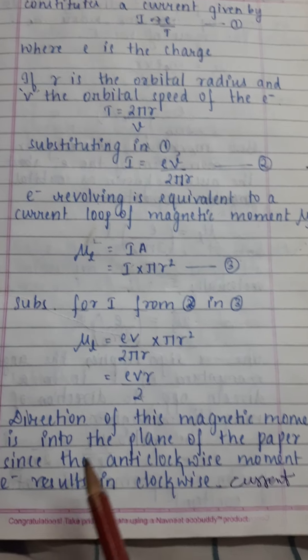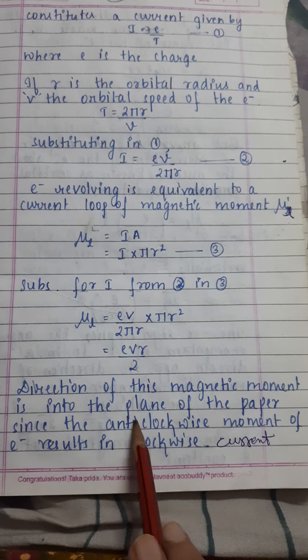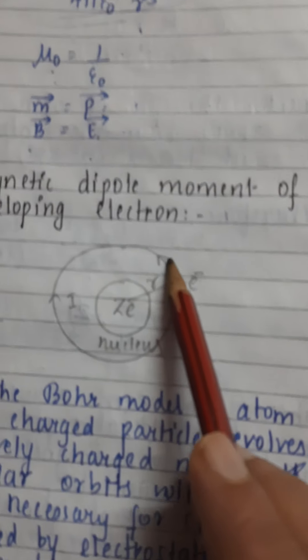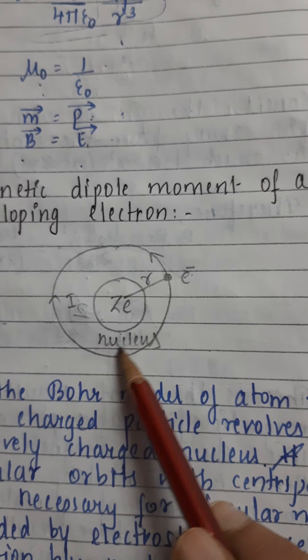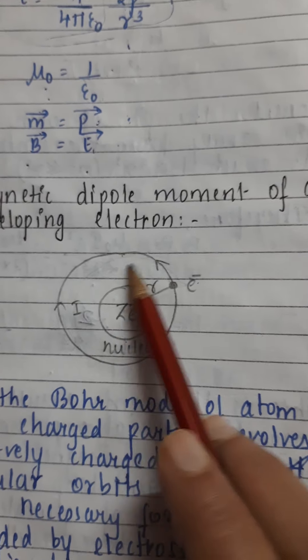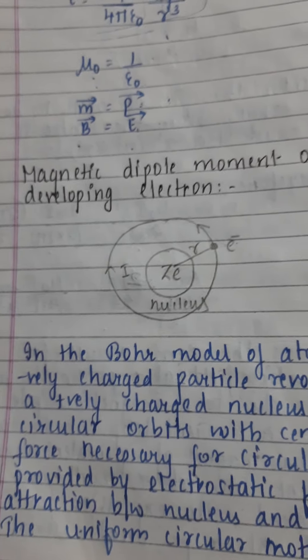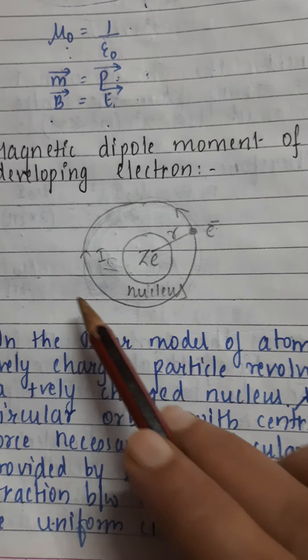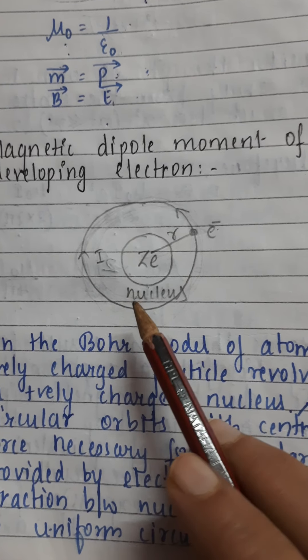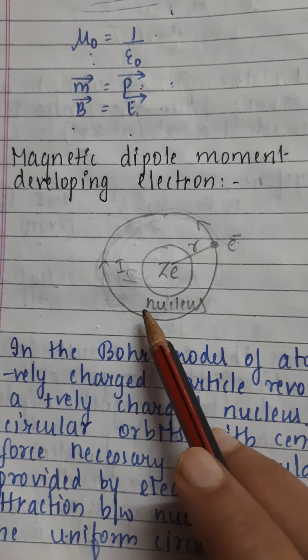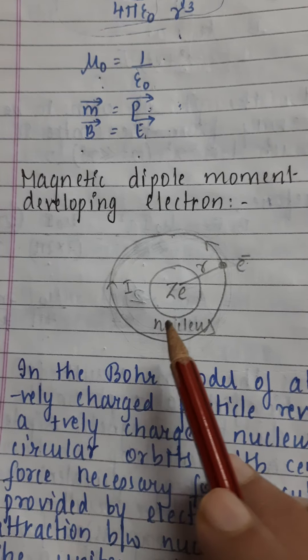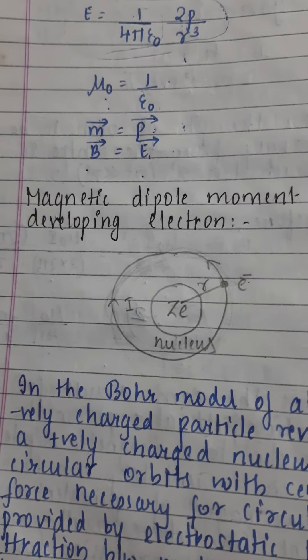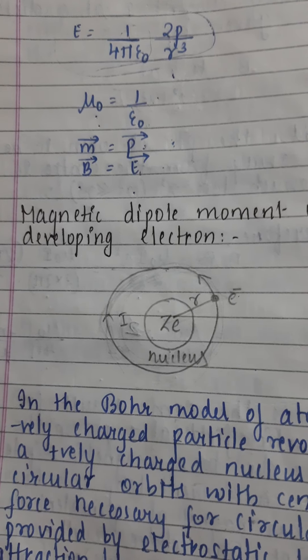Now let's look at the direction. The direction of this magnetic moment is into the plane of the paper, since the anti-clockwise moment of e results in clockwise current. By convention, electrons move in the opposite direction of current flow. Using the right hand thumb rule with fingers in the clockwise direction, the thumb points into the plane of the paper. So the magnetic moment direction goes into the plane of the paper.